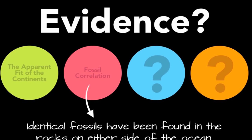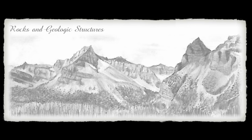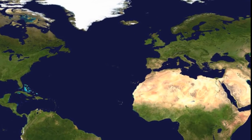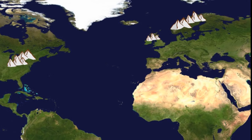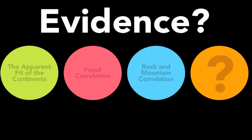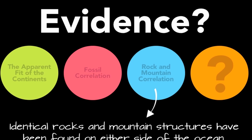Wegener knew he needed a stronger case, and so he went back to the library and became fascinated by rocks and geologic structures like mountain ranges of the past. He found a really interesting pattern. If you look at the mountain ranges in the northeastern United States and the mountain ranges in northern Europe, they match up perfectly — they are made of the same type of rock and the same age of rock. A better explanation is that these mountains were once connected, and as the continents moved, they were torn into two. That becomes evidence number three: rock and mountain correlation. Identical rocks and mountain structures have been found on either side of the ocean, suggesting that the continents were once connected.